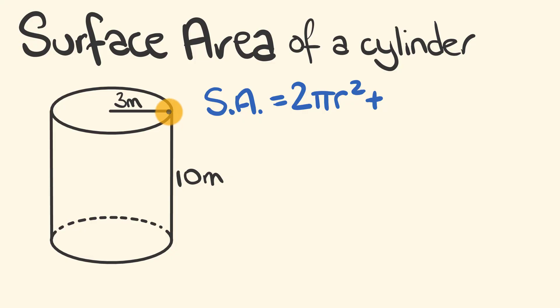The width of it is equal to the distance all the way around our circle here. So the distance around a circle, that's a circumference, which is equal to 2 pi r. And this is being multiplied by our height.